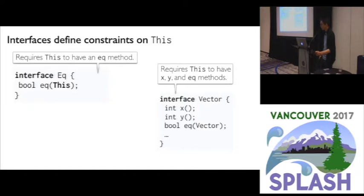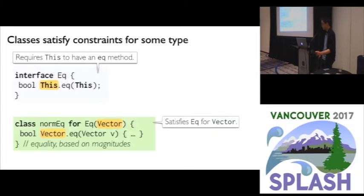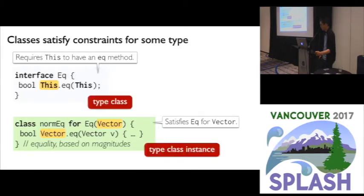Like EQO, we can view the Vector interface as defining a constraint on the this-type — the constraint requires the type being constrained to have the X, Y, and EQ methods. We can often omit receiver types, giving us back our good old Java-like interfaces. A class in Familia satisfies constraints for some specific type. Class NormEQO is declared to satisfy EQO for the Vector type. If we view an interface in Familia as a type class, then a class in Familia can be viewed as a type class instance.